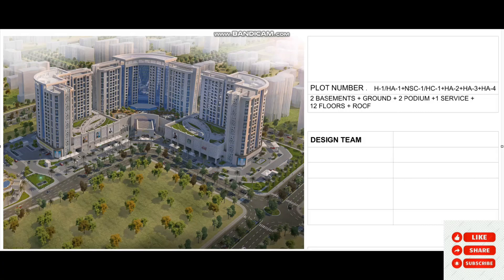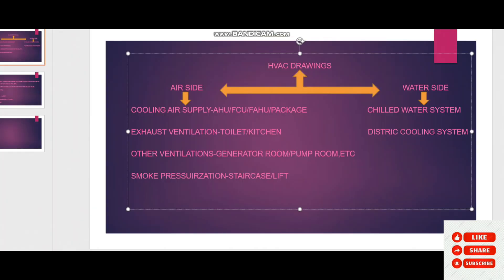Welcome back. In today's video we are going to see how to study a high-rise building project which has 70 meters height. I'm going to tell you some important installation requirements from the South Building Code UAE, Final Life Safety Code, and Qatar Civil Defense. This project has the arrangement of two basements, ground floor, two podiums, one service level, 12 floors, and finally the roof. This luxurious project has lots of special HVAC requirements, which is the reason I particularly selected it.